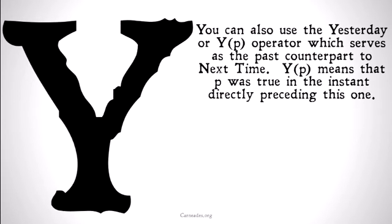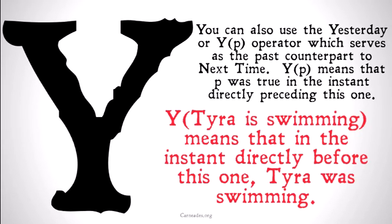You can also use the yesterday operator, YP, which serves as the past counterpart to the next time operator. Y gives us a nice counterpart to X, and YP means that P was true in the instant directly preceding this one. For example, Y(TyraIsSwimming) means that in the instant directly before this one, Tyra was swimming.